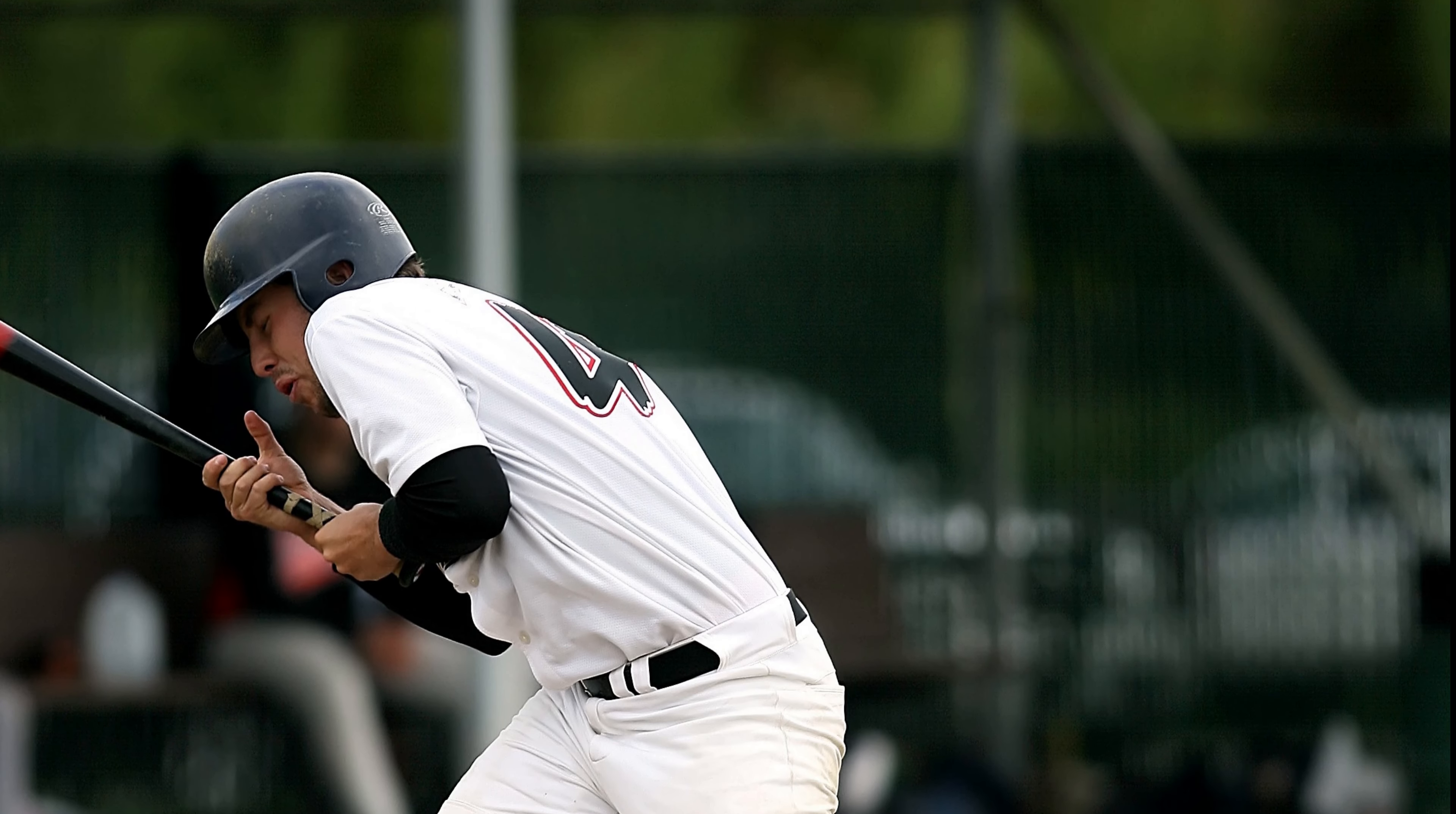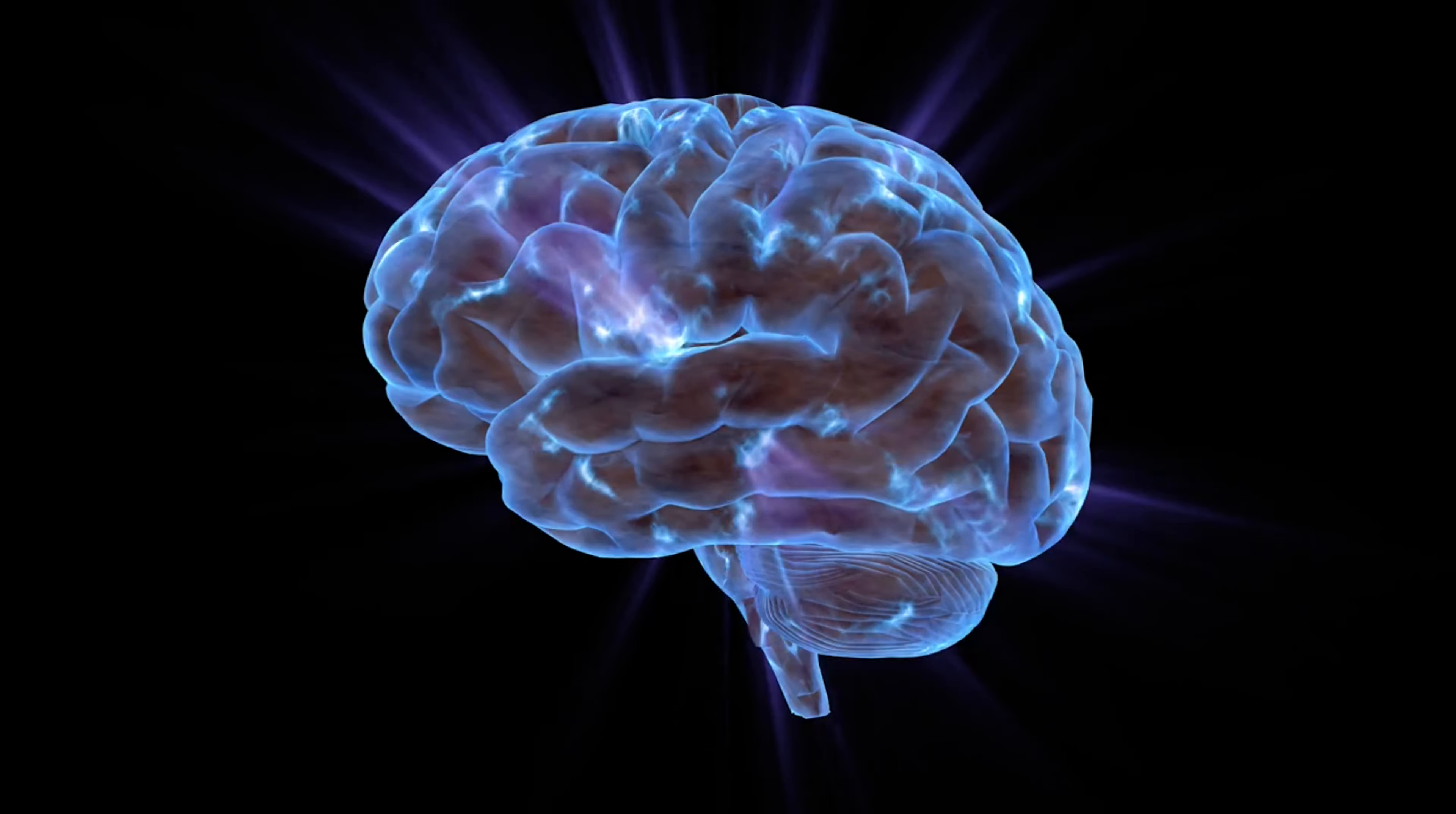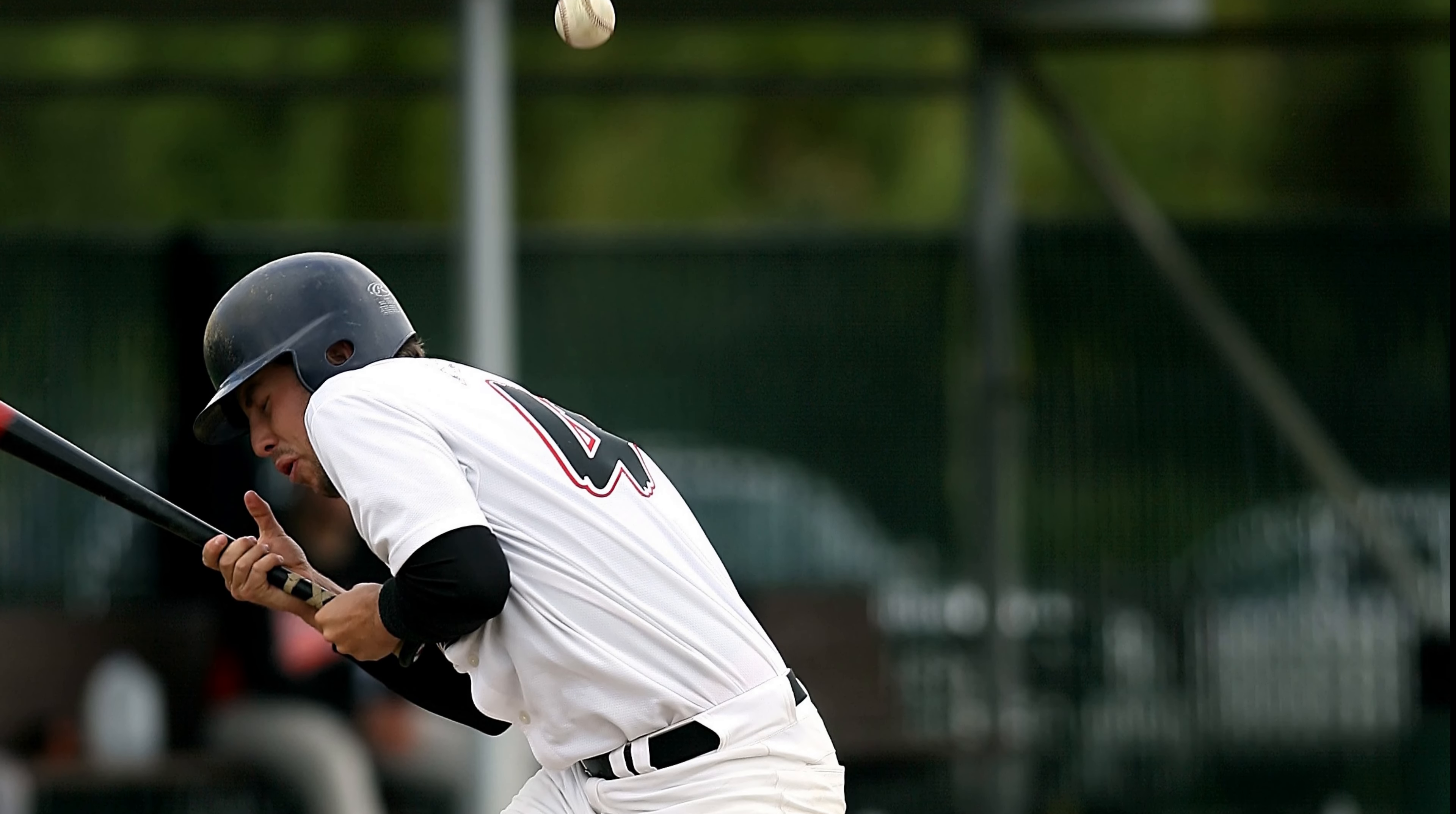For example, when you suddenly dodge a ball thrown at you, your subconscious mind is at work. Your eyes see the ball, and this information is quickly sent to your brain. Without you thinking about it, your brain figures out the ball is a threat and sends signals to your muscles to move. As we know, this all happens within a second.